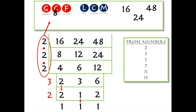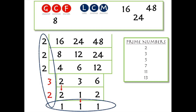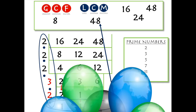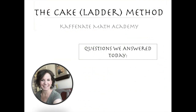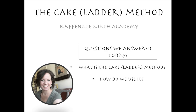When finding the greatest common factor this time, we need to be careful — I only circle the factors on the left that applied to all numbers, leaving the indented tiers alone. Multiplying those together gives a greatest common factor of 8. For the least common multiple, all the numbers come back in — multiplying them all together gives a least common multiple of 48. That's it for the cake and ladder method!